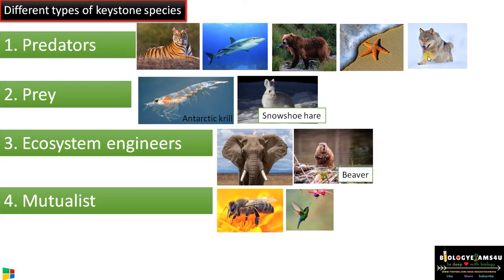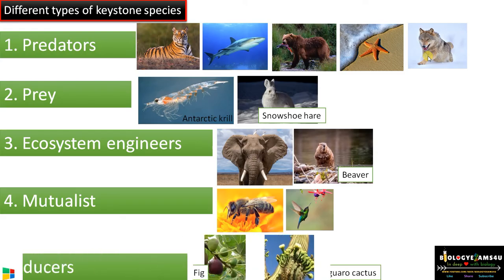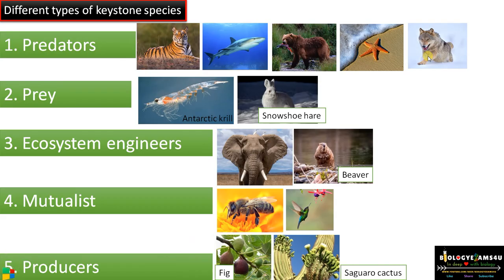The survival of mutualists like honeybees and hummingbirds is closely linked to the survival of all other plant and animal species that depend directly or indirectly on those plants. Finally, even producers can be a keystone species — like the fig tree (Ficus), which provides food throughout the year for all organisms in a forest. Another example is the saguaro cactus, which serves as both a nesting site and food source for many species of animals, plants, and insects, acting as a keystone species in the desert ecosystem.